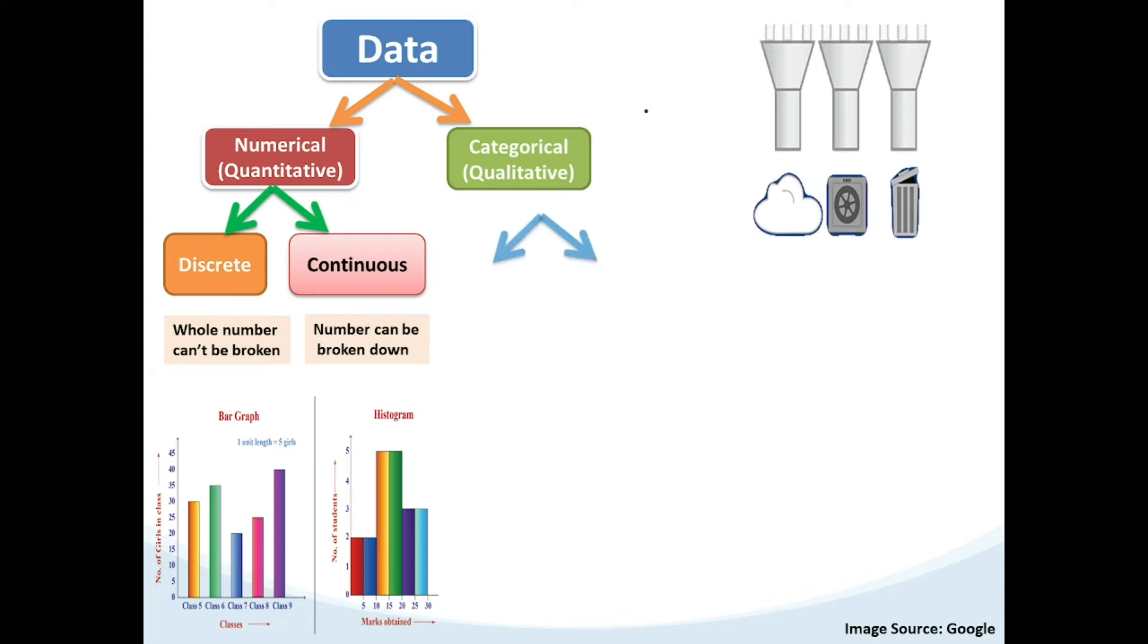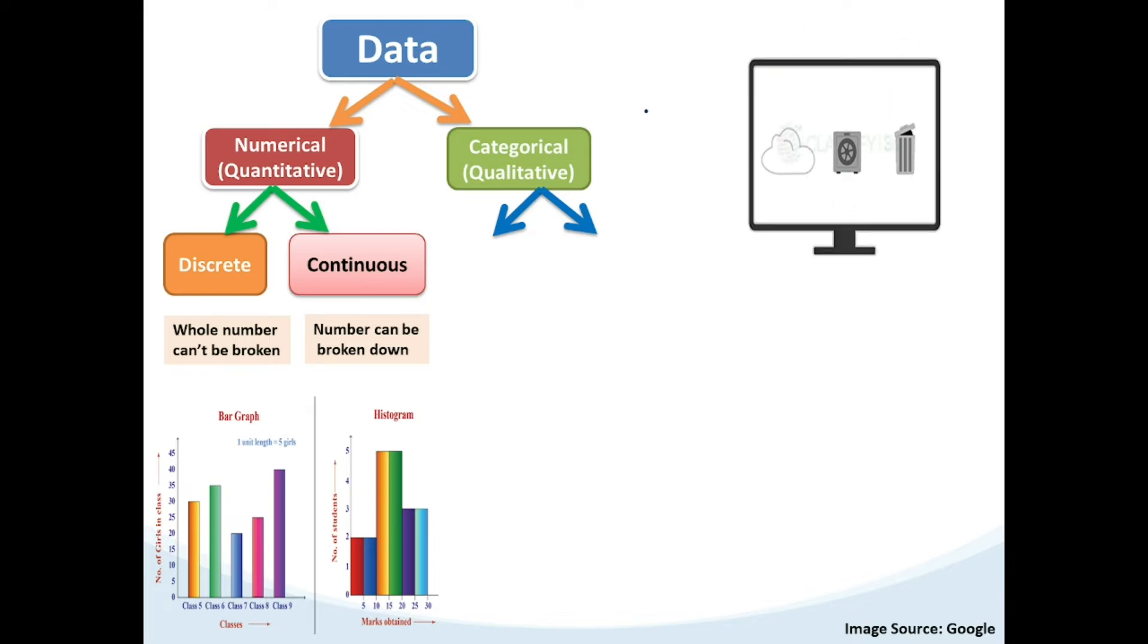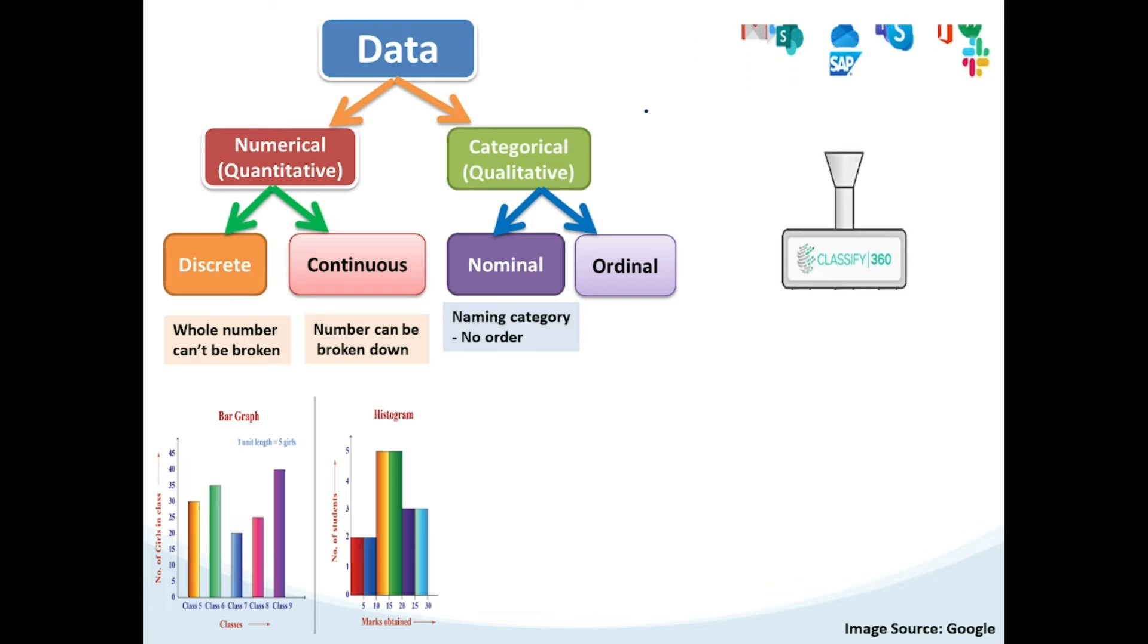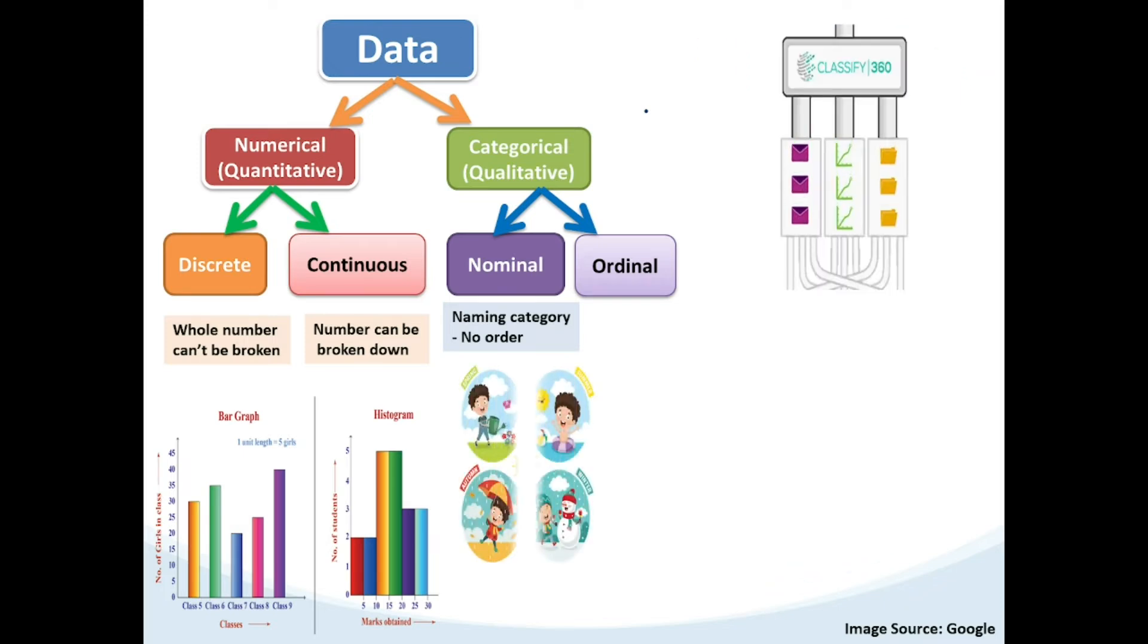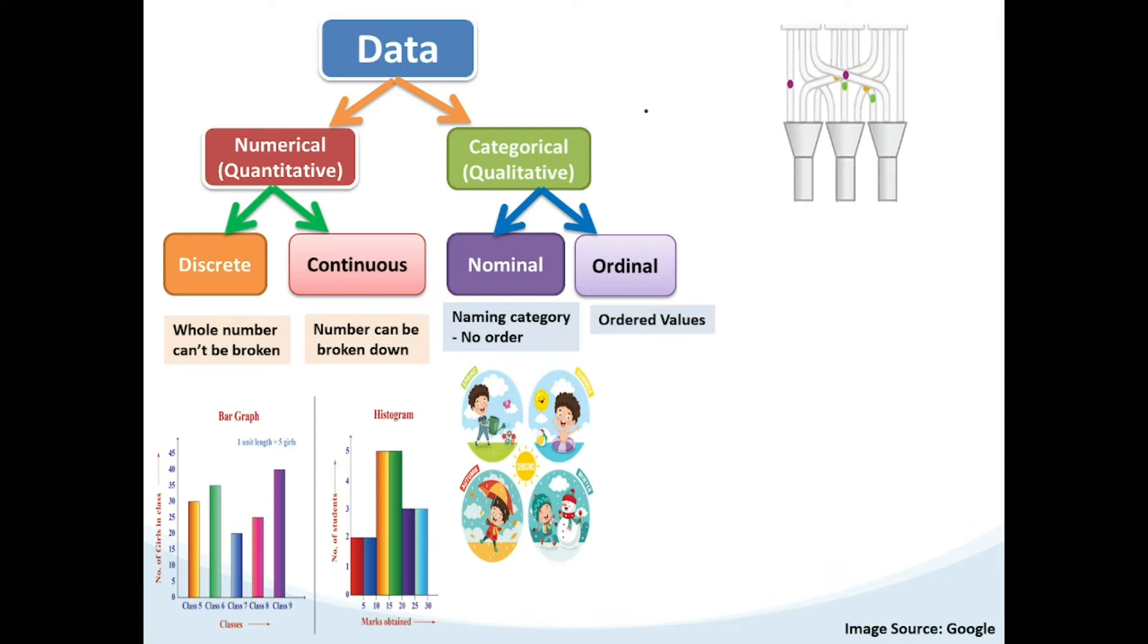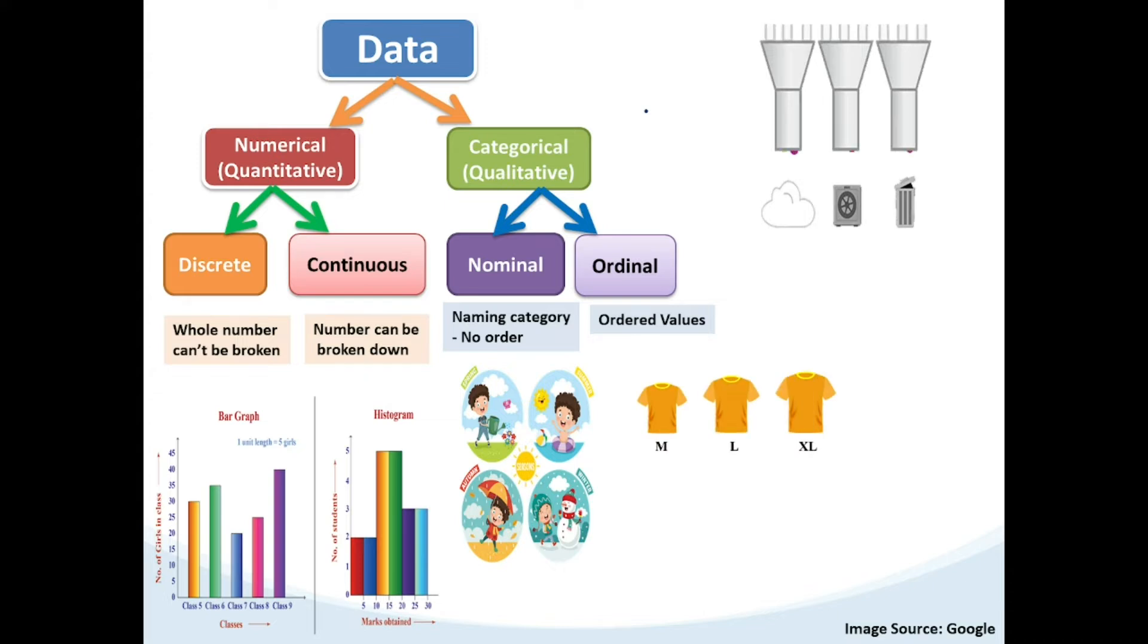Then we have categorical qualitative data. These data are observational and descriptive. It holds two divisions such as nominal and ordinal. Nominal data are used for naming the variables - examples are the name, gender, season, etc. Ordinal data is placed with some kind of order - for example the size: we have large, medium, extra large.